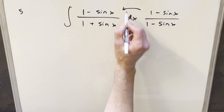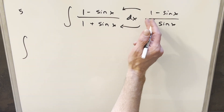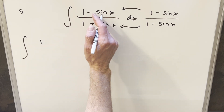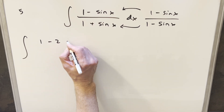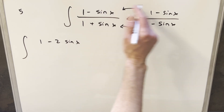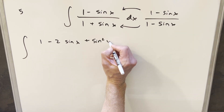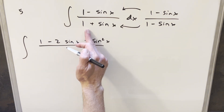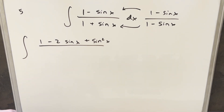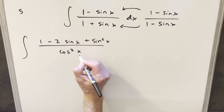Let's distribute everything in and see what happens. In the numerator, distributing all the way out, we get 1, then the middle term gives minus 2 sine x, and then minus sine x times minus sine x gives plus sine squared x. In the denominator, multiplying this out gives 1 minus sine squared x, which I'll rewrite using an identity as cosine squared x.